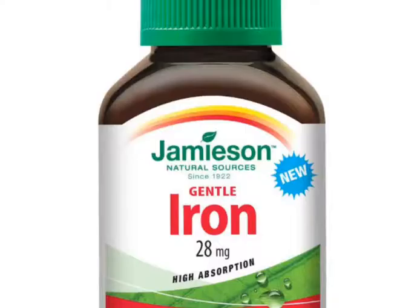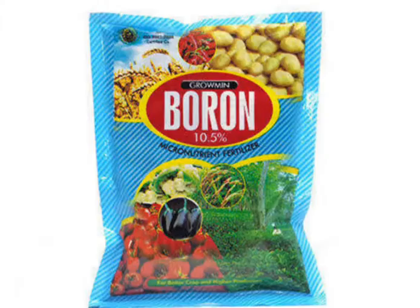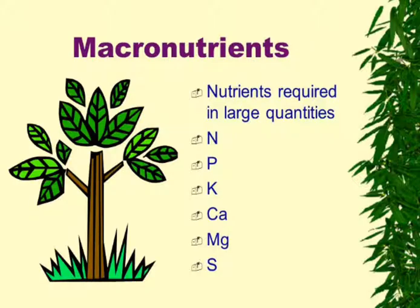Micronutrients are required by plants in small amounts. Examples include zinc, copper, and boron, among others like manganese, chlorine, and molybdenum.